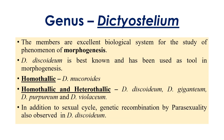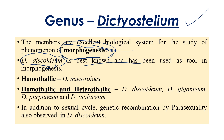One important genus to consider is Dictyostelium. It is a very important genus because it is an excellent biological system to study the phenomenon of morphogenesis — that is, the production of new kinds of organs. Dictyostelium discoideum is the best-known species used to study this morphogenesis phenomenon.